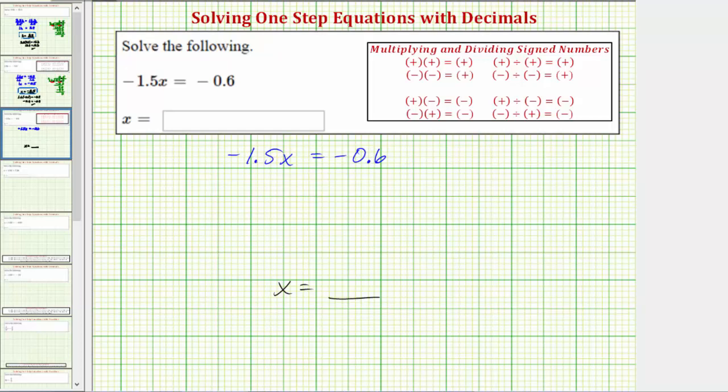Therefore, to solve for x, we will divide both sides by negative 1.5. Division is the opposite operation of multiplication.